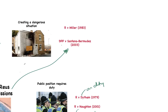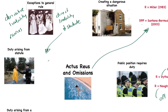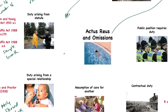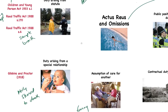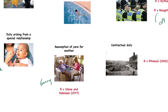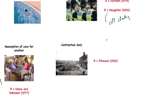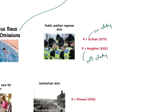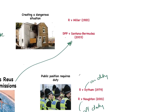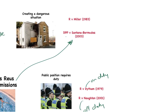To summarise: the main areas of omissions liability are statute — including the Children and Young Persons Act and the Road Traffic Act — a duty from a special relationship (Gibbons and Proctor), assumption of care for another (Stone and Dobinson), contractual duty (Pittwood), public position (Dytham and Norton), and creation of a dangerous situation (Miller and Santana Bermudez). Next video, we will look at causation.